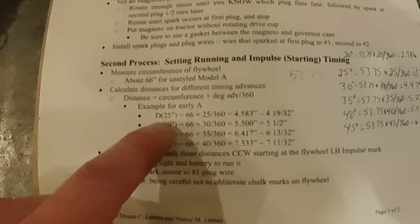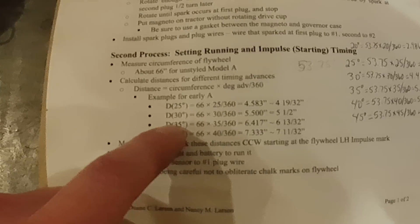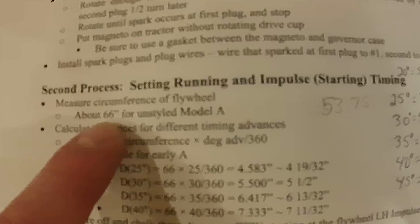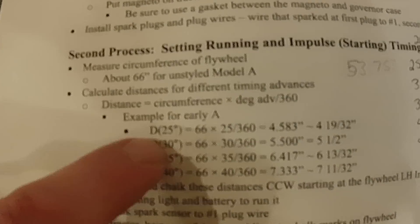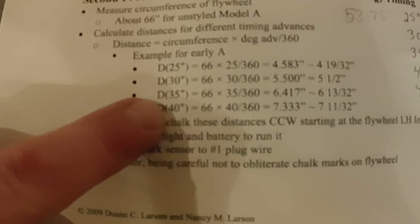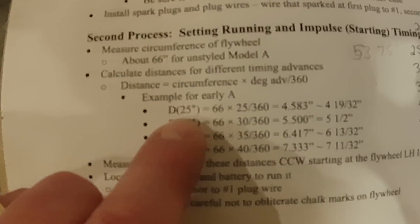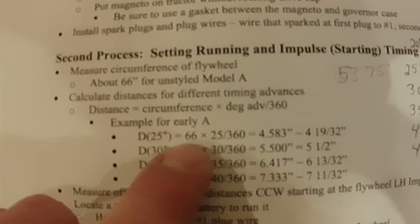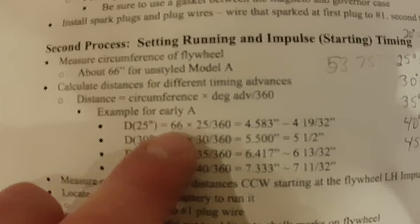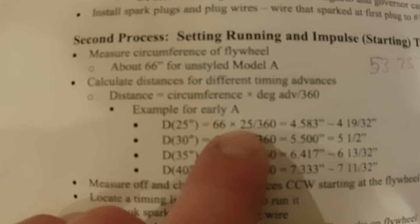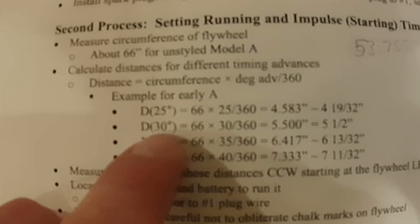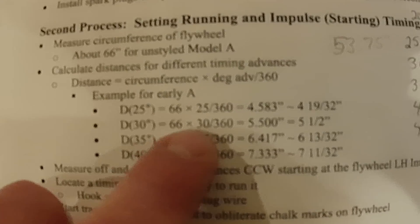In this example, we're going to determine the timing marks because we need marks on that flywheel. For this example, this was a 66 inch circumference on an unstyled model A. If we want to make timing marks at 25, 30, 35, and 40 degrees, it's a very simple equation. For a 25 degree mark you would take 66, which is that outside circumference, times 25, which is the degree mark, divided by 360. That's 4.583.